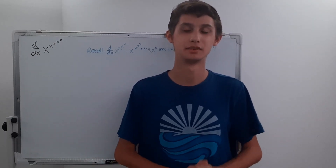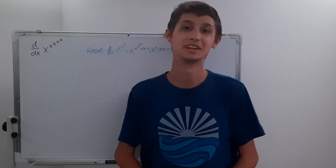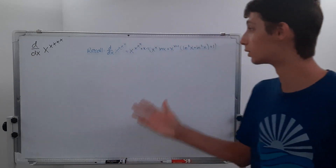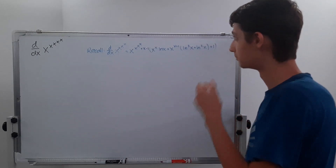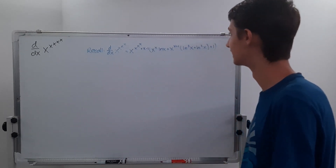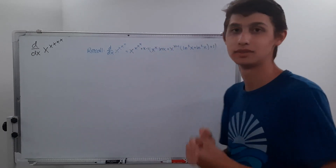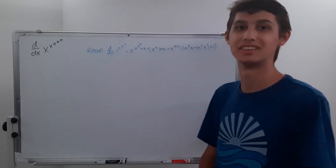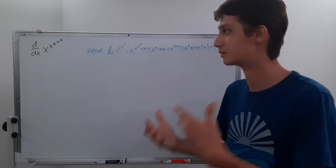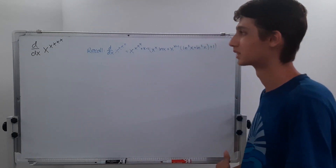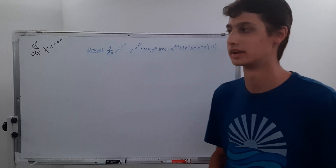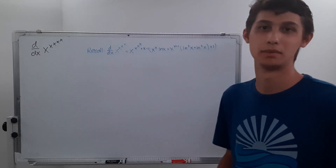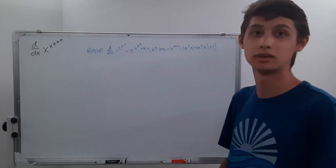Today we're going to be finding the derivative of the fifth tetration of x. In the last episode we found the derivative of the fourth tetration, which I have right there. It's a lot — this whole thing — and we're going to use that to help us find the derivative of the fifth tetration. This is going to be only part of that answer, and each time it gets worse and worse. I'm not going to go to the 20th tetration, but these are fun to make so I'll keep making them.